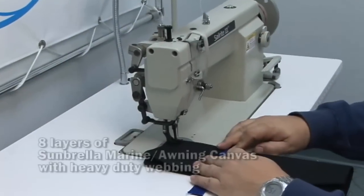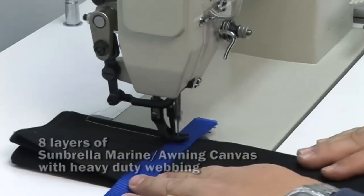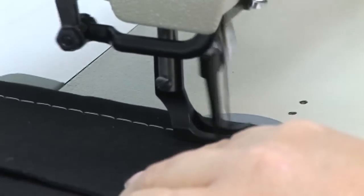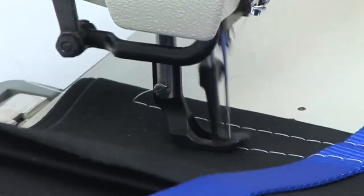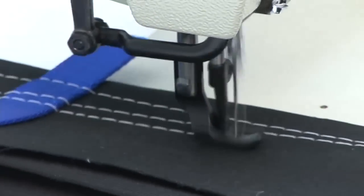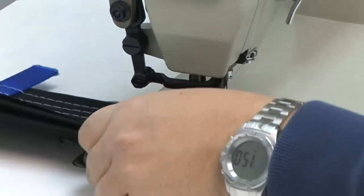Let's start out with 8 layers of Sunbrella fabric and this extra heavy weight nylon webbing. Walks right over it beautifully. This is using that MCSER power system. Let's walk over that bump in reverse.